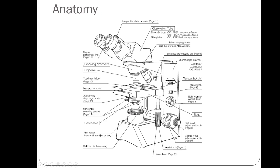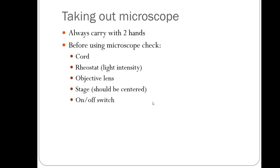The light projects upward through the slide. We have the condenser, which concentrates the light beam on the specimen. We can also adjust the aperture iris diaphragm — this lever goes back and forth and helps with contrast and sometimes resolution. The light intensity knob, often called the rheostat, controls how bright the light is — all the way up is very bright, all the way down is basically off. There's also the on/off switch.